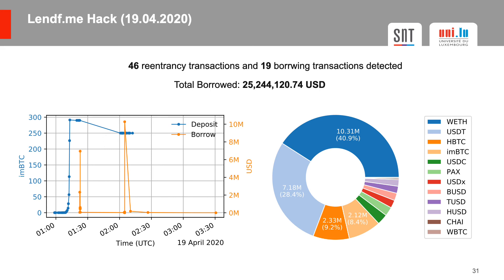Similar to the Uniswap attack the day before, the Lendf.me attack started roughly at 1 o'clock UTC and lasted for 2.5 hours. The attacker exploited the same token's callback function. The attacker would start by depositing X amount of tokens into Lendf.me's liquidity pool, then still within the same transaction deposit another amount Y, triggering the callback function previously registered. This callback would then withdraw the previously deposited X tokens from Lendf.me. By the end of the transaction, the attacker's token balance would be X minus Y on the token contract, but the balance on Lendf.me would be X plus Y — thereby increasing their balance by X without actually having deposited that amount. The issue is that the user's balance is only updated after the token transfer, and that update is based on data from before the transfer, ignoring any updates made in between.